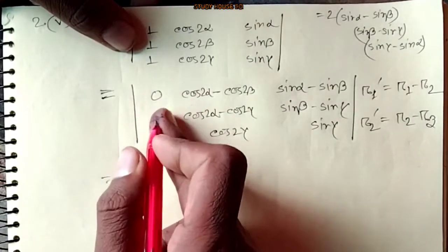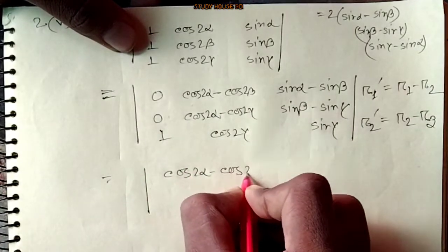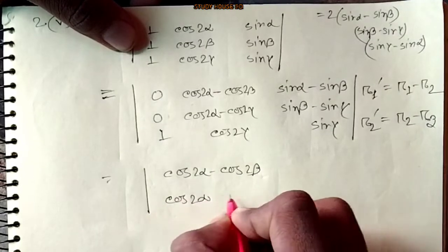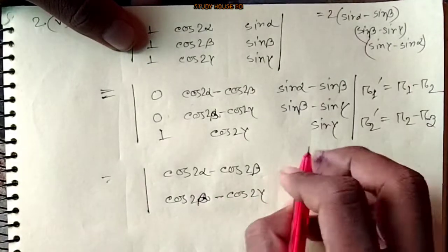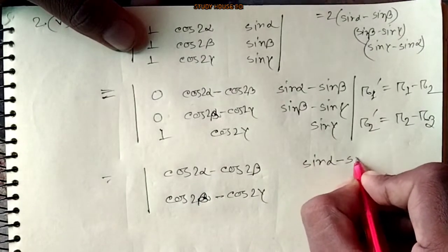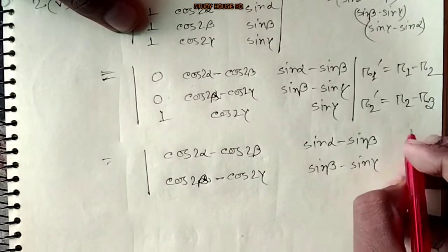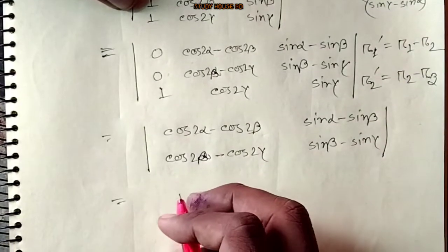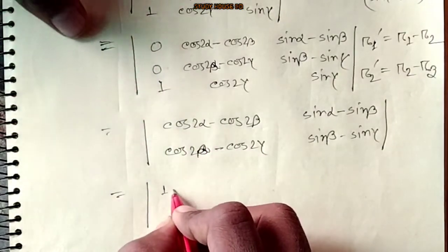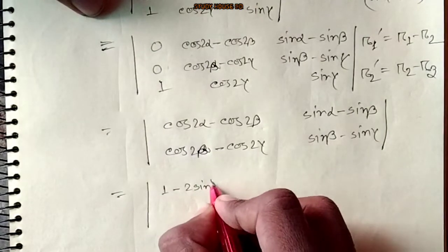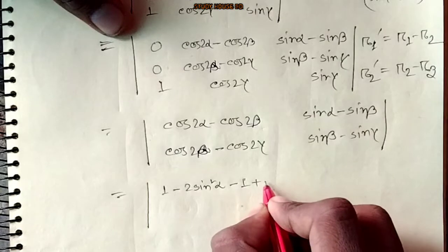Okay, if you want to see: the same thing is 1, the same thing is 1. So cos2α minus cos2β, cos2β minus cos2α. So cos2α minus sin β minus sin γ.